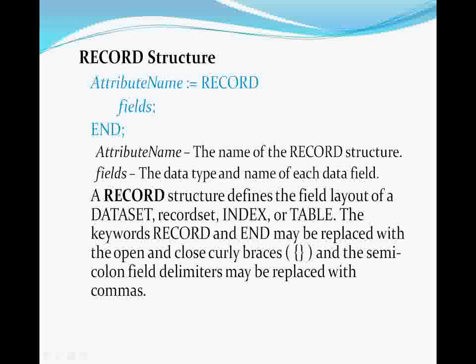The record structure defines the layout of the fields in a dataset. It begins with the keyword RECORD and ends with the keyword END. In between are as many field definitions as are needed to fully define the layout of the file. Note that curly braces are lexical equivalents of the words RECORD and END. Their purpose is to allow you to define a record structure within the function that uses it instead of creating a separate definition.